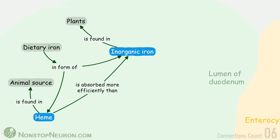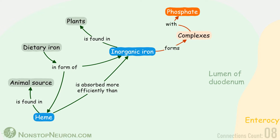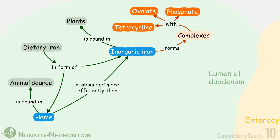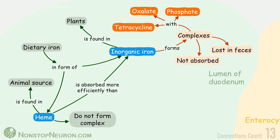Heme is absorbed more efficiently than inorganic iron. Inorganic iron forms complexes with other substances in food like phosphate, oxalate, tetracycline, etc. These complexes are not absorbed and are lost in feces. On the other hand, heme does not form such complexes. This explains to some extent why heme is absorbed more efficiently.